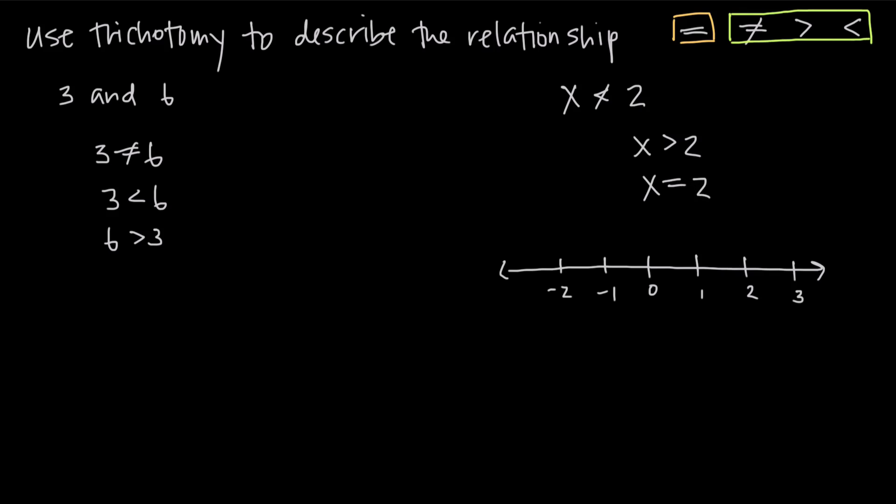But it's possible that x could be equal to two. So we want to go ahead and say that x could be equal to two and put a point here. And it's also possible that x could be greater than two. So x could be any of the values to the right of two. So we want to also indicate that x could be any of these values to the right of two.